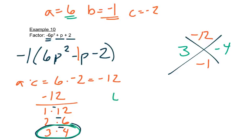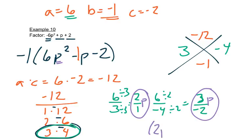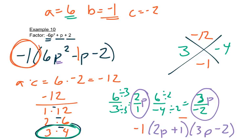Since we need to multiply to get a negative, one number must be negative, and since we're adding to get a negative, we want the bigger number to be negative. So we use 3 and negative 4 to get negative 1. So we put 6 over 3 and 6 over negative 4. We can reduce: dividing by 3 gives 2 over 1, and dividing by 2 gives 3 over negative 2. There's a P squared, so this is P and P. Reading straight down: 2P plus 1, and 3P minus 2. This negative 1 that was out in front has to stay out in front.